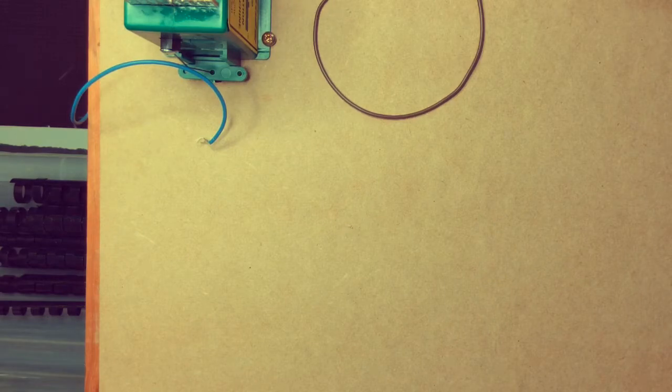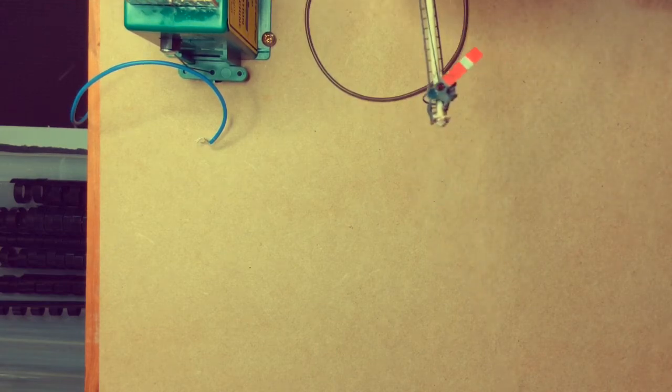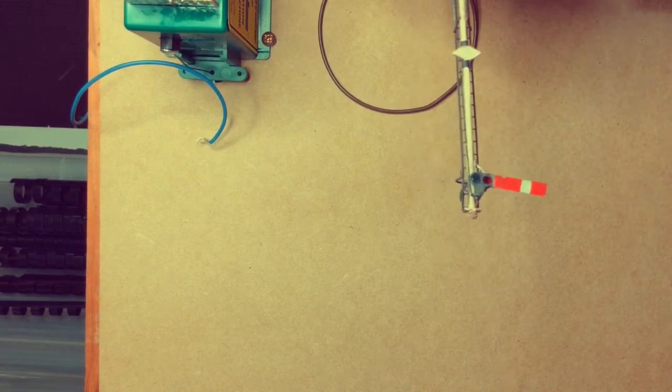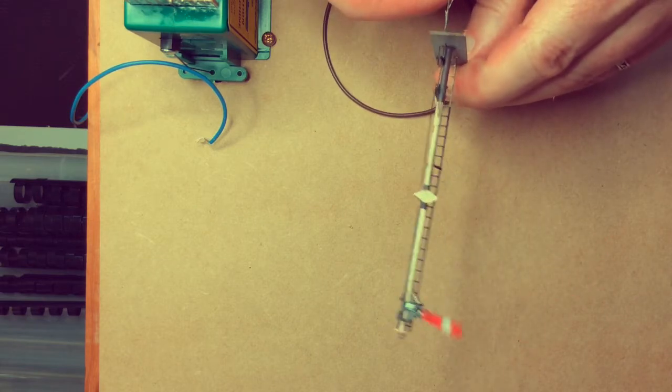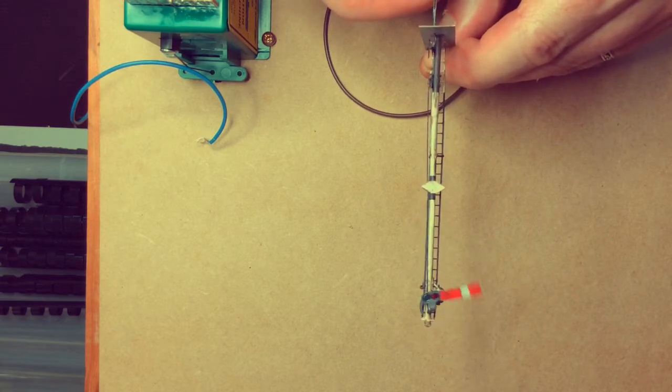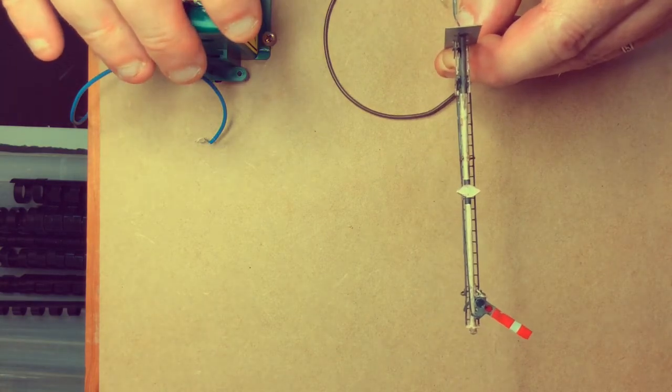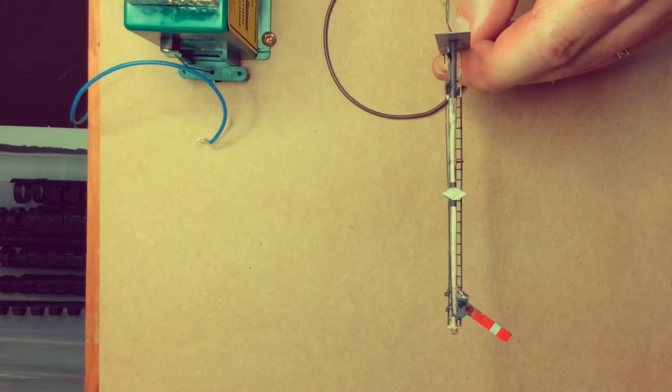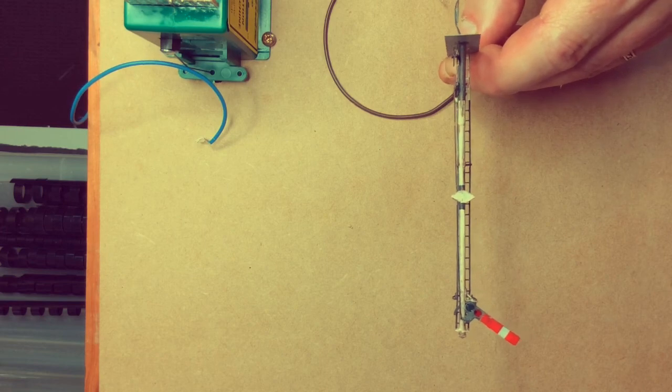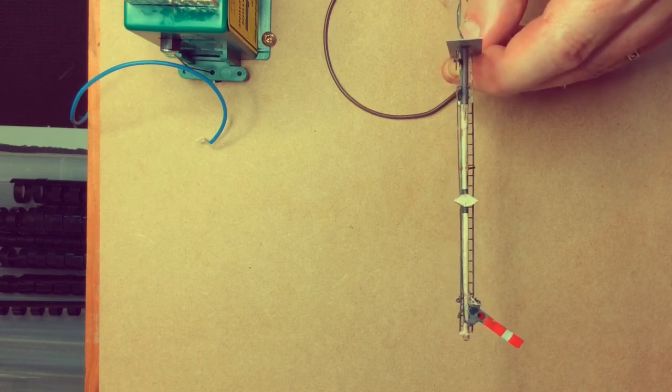Yep, hope you enjoyed that. As I said, we're going to have a look at how we get the actuation going to get these semaphores working, and we're going to use our SIGM-20 board that I showed you in a previous video on how we wired that up. That will drive these Tortoise motors that will drive the actuators to make these signals work. So I'll put that up on another video. Any questions, leave them down below, and I hope you enjoyed the video.